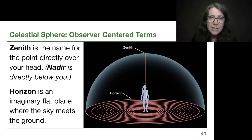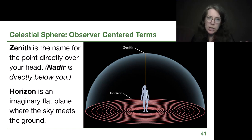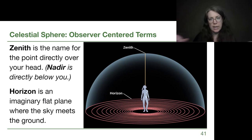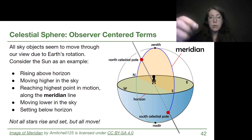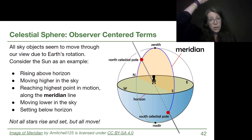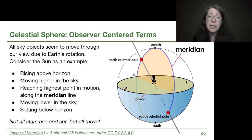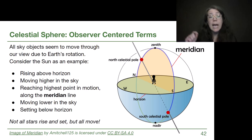We tend to use the word horizon in our everyday lives in a similar way, but in astronomy, the horizon is a simplified perfect flat plane — we don't care that there might be a tree in the way in one direction or buildings blocking our view in another. It's where the sky should meet the ground if we had a nice flat field all around us. The last key observer-centered term is the meridian. The celestial meridian is the line that goes from perfectly due north, directly overhead to our zenith, and hits exactly at the horizon due south. It also goes through nadir, and two special points: the north celestial pole and the south celestial pole.